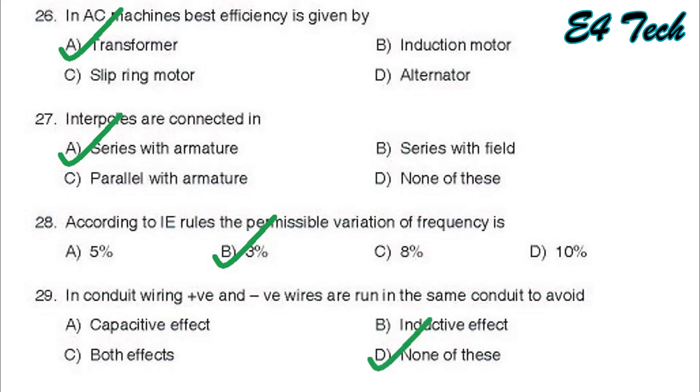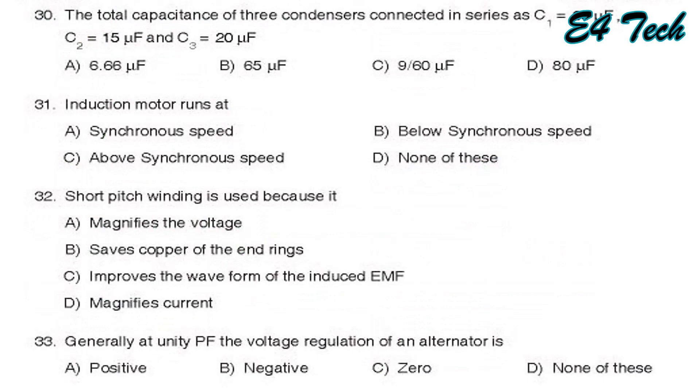Next, the total capacitance of three condensers connected in series: C1 30 microfarads, C2 15 microfarads, C3 20 microfarads. In series connection, we have 1 by C equal to 1 by C1 plus 1 by C2 plus 1 by C3. That is 6.66 microfarads, option A.